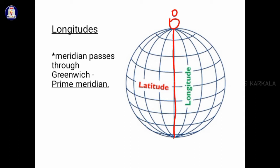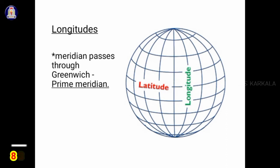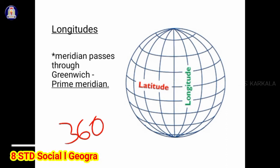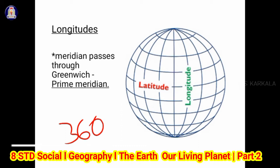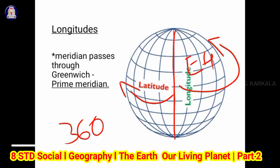The prime meridian is marked as zero degrees longitude, and the equator is marked as zero degrees latitude. In total, there are 360 longitudes. East of the prime meridian there are 180 longitudes, and west of the prime meridian there are 180 longitudes. The zone between the prime meridian and 180 degrees east longitude is called the Eastern Hemisphere, and the opposite zone is called the Western Hemisphere.